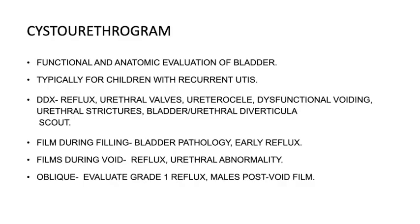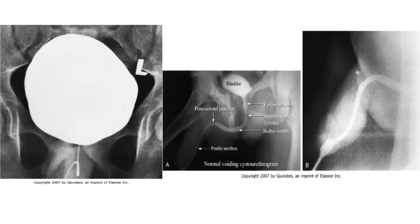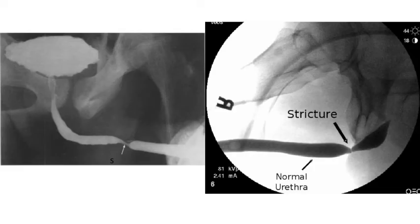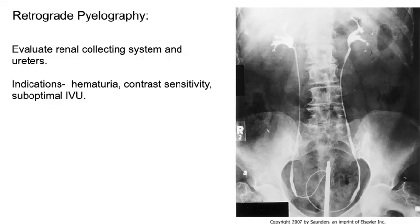Another study is the cystourethrogram — this is used to study the urinary bladder and urethra. Another example is the retrograde urethrogram: we put contrast into the urethra via the penis and the contrast fills up to the urinary bladder. You can see different areas of stenosis of the urethra at different grades — this is the only study with which we can find this diagnosis. In a retrograde pyelogram, we reach the urinary bladder via cystoscopy, pass a catheter through both ureters, and reach both kidneys.